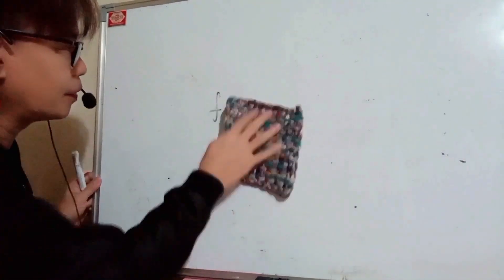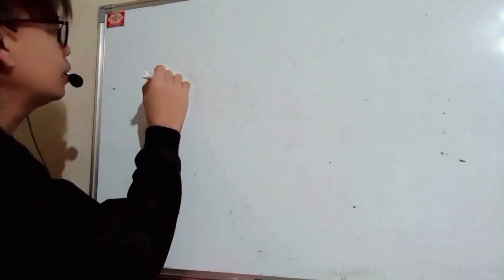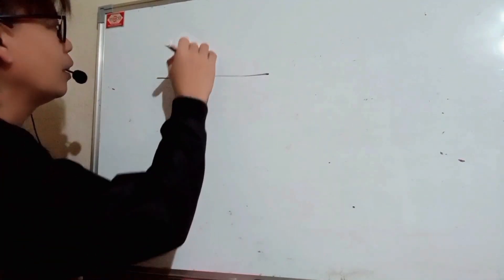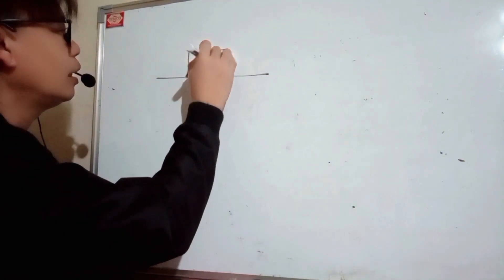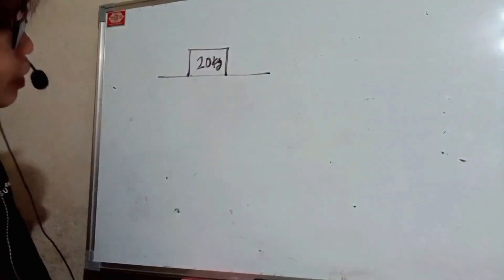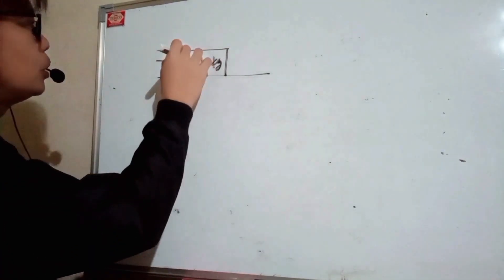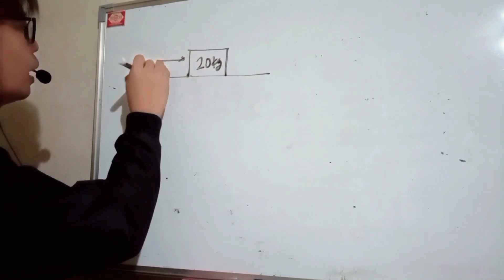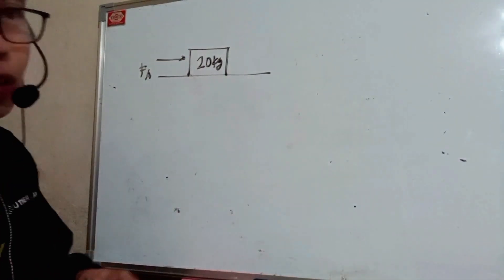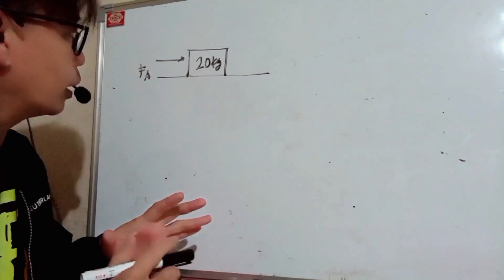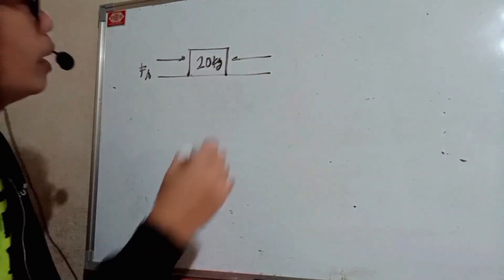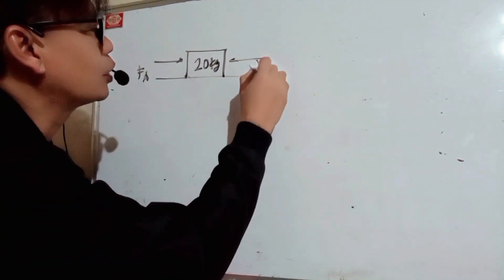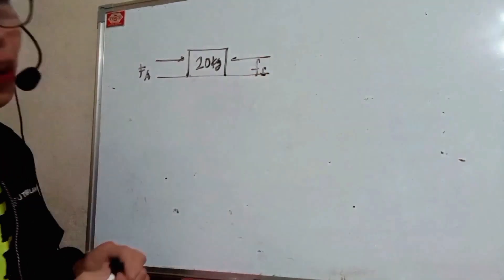Let's try to illustrate to better understand. So let's say you have a surface and you have a certain object — let's say this is 20 kilograms. We're going to push the object. This is your applied force, FA — the force you apply in pushing the object. You will be hindered or resisted by your friction — in this case, your static friction.